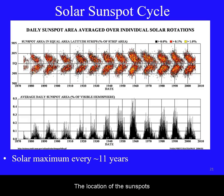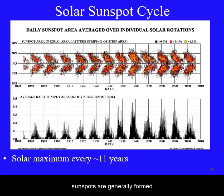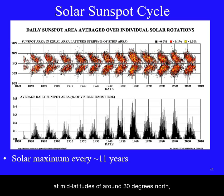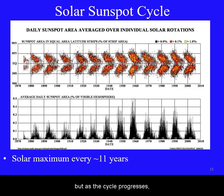The location of sunspots is also relatively predictable. At the beginning of each solar cycle, sunspots are generally formed at mid-latitudes of around 30 degrees north and 30 degrees south, but as the cycle progresses, sunspots form nearer the solar equator.